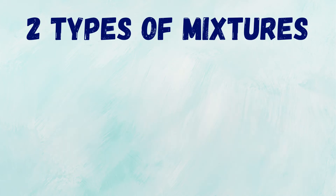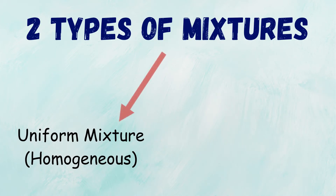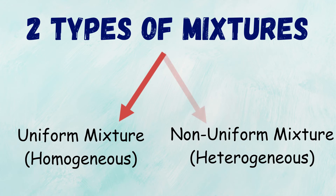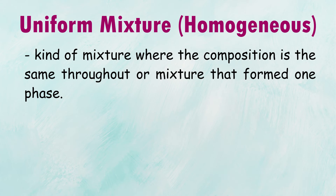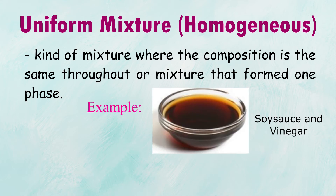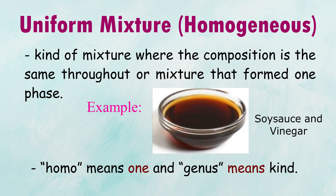Two types of mixtures: uniform mixture and non-uniform mixture, also called homogeneous and heterogeneous mixture. A uniform or homogeneous mixture is a kind of mixture where the composition is the same throughout, or mixtures that form one piece. Example: soy sauce and vinegar. 'Homo' means one and 'genus' means kind.